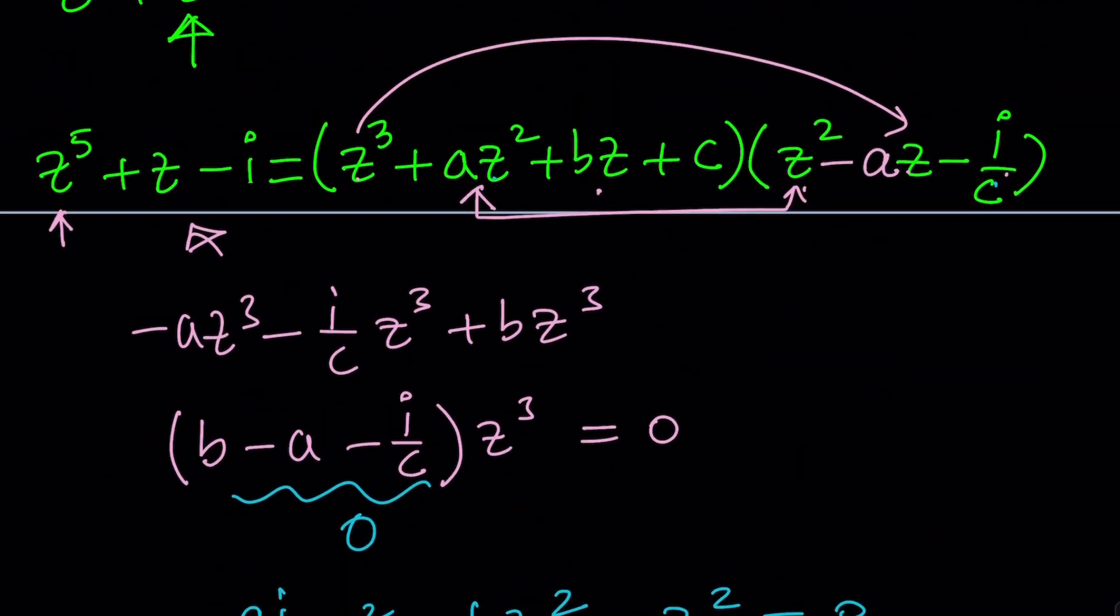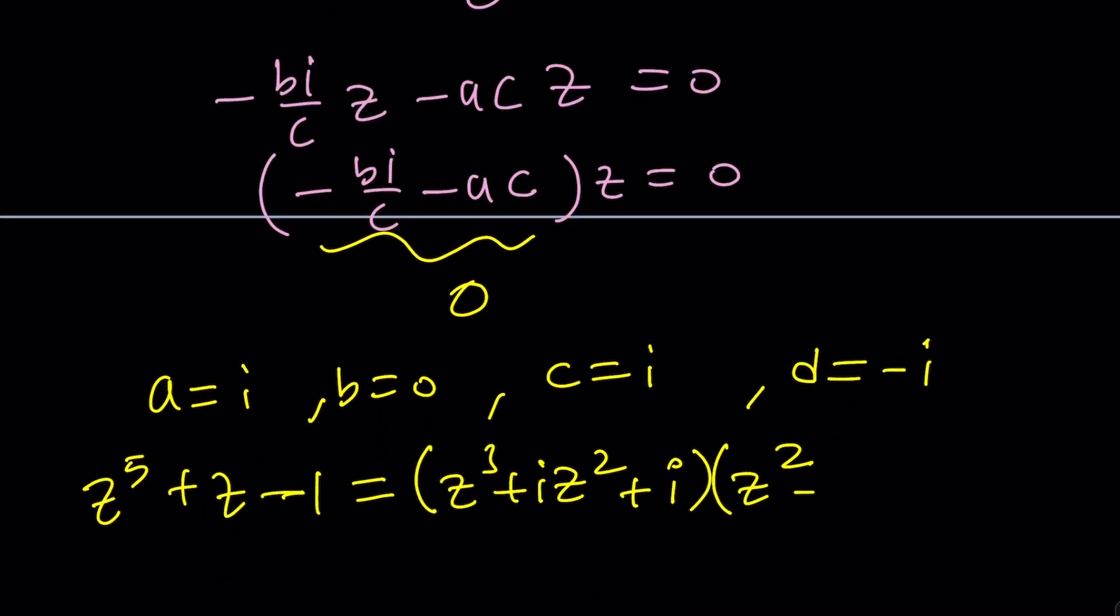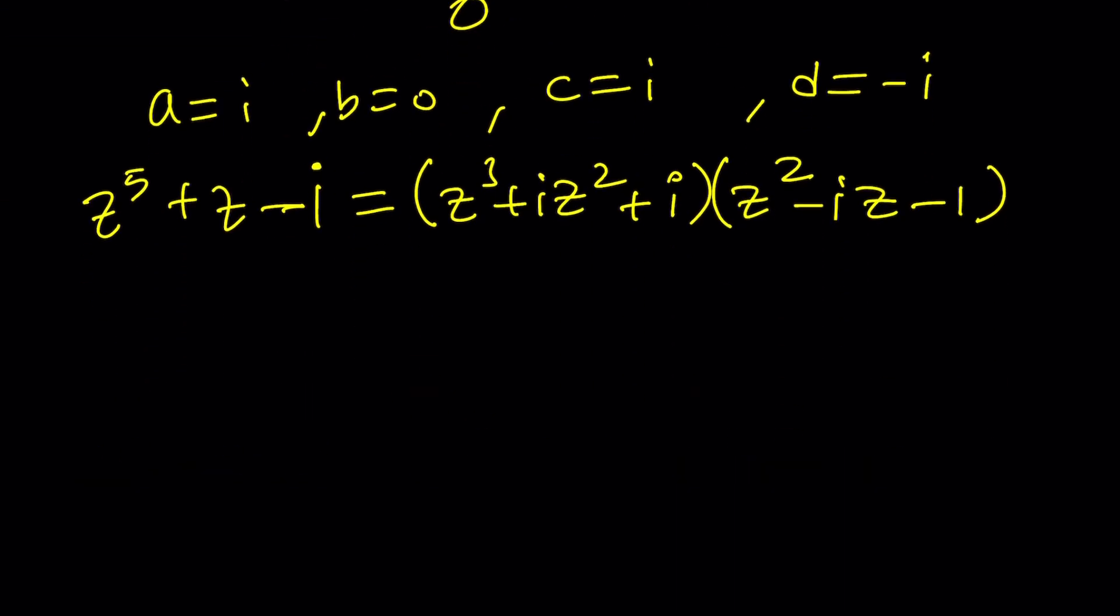So that's going to be minus A, minus i z. And finally, notice that we need to get a minus one. By the way, this was an i. Never mind. This is supposed to be a minus one. Make sense? So this is a way to factor it. And by setting this equal to zero, you can basically look at it separately, like this is a cubic, that's a quadratic.